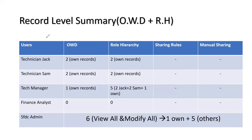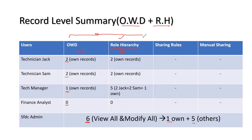In the previous example we looked at how exactly the OWD is helping us. Now let's see, assuming we have set up the role hierarchy for the object called service request and we already have the OWD in place — we will be seeing the effect of OWD plus role hierarchy. Jack has two records, Sam has two records, technician manager has one record, finance analyst has zero records, and the system administrator owns one record but has six records visible due to view and modifiable access. Now let's see the impact of role hierarchy enablement on the OWD.